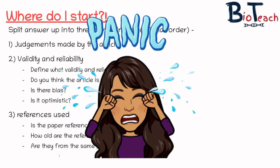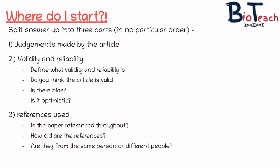Many of you will look at this question and think, where on earth do I even start? Especially when you look at Article 3 — it's normally really long, it's got a horrendous number of references at the end, and it's really difficult to know where to begin. The first thing I always say to my students is split your answer up into three parts, and these three parts aren't in any particular order.